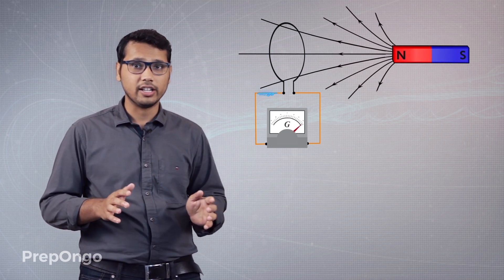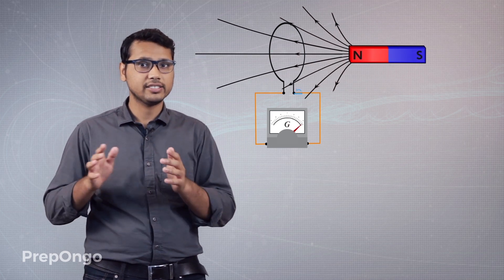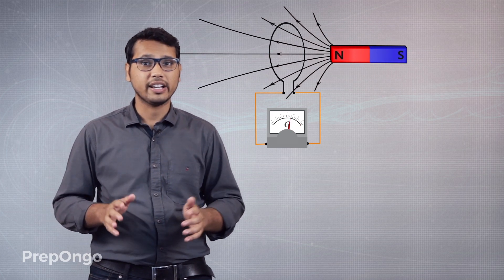So we will try to find out what all experiments Faraday did and how he established that current can be produced by a magnetic field. Now we will try to replicate his experiments.